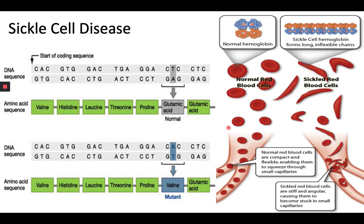How can biochemistry impact on health and disease? Let's look at a classical example: sickle cell disease. Sickle cell disease is a group of disorders that affects hemoglobin, the molecule in red blood cells that delivers oxygen to cells throughout the body. People with this disease have atypical hemoglobin molecules called hemoglobin S, which can distort red blood cells into a sickle or crescent shape. When red blood cells sickle, they break down prematurely, which can lead to anemia.